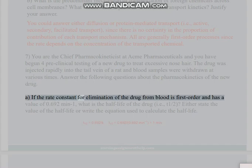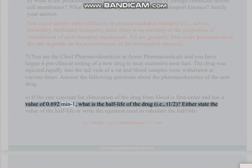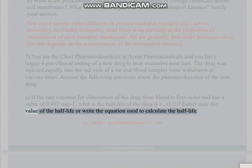Part A: If the rate constant for elimination of the drug from blood is first-order and has a value of 0.692 min⁻¹, what is the half-life of the drug (i.e., t₁/₂)? Either state the value of the half-life or write the equation used to calculate the half-life.